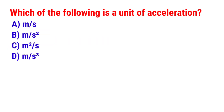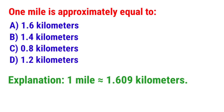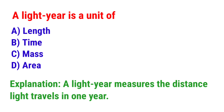Next question: Which of the following is a unit of acceleration? The answer is option B — Meter per second square. Next question: One mile is approximately equal to? The answer is option A — 1.6 kilometers. Next question: A light year is a unit of? The answer is option A — Length.